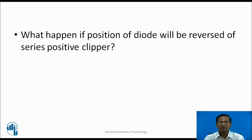What happens if the position of the diode is reversed in the series positive clipper? In the series positive clipper, during positive half cycle, diode D is reverse biased. But if we reverse the position of the diode, during positive half cycle diode D becomes forward biased, so the circuit becomes complete and positive voltage is developed across the load. During negative half cycle, diode D becomes reverse biased, circuit becomes incomplete, so load voltage is zero. Meaning if we reverse the diode in the series positive clipper, the positive half cycle appears across the load, whereas it clips the negative half cycle.